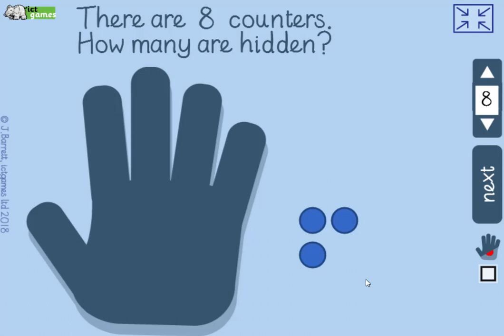Working on subtraction, I've chosen to have eight counters. Let me show you—you can change this. There are eight counters. How many are hidden under the hand?